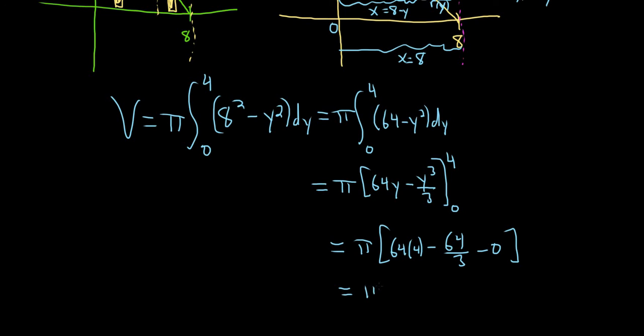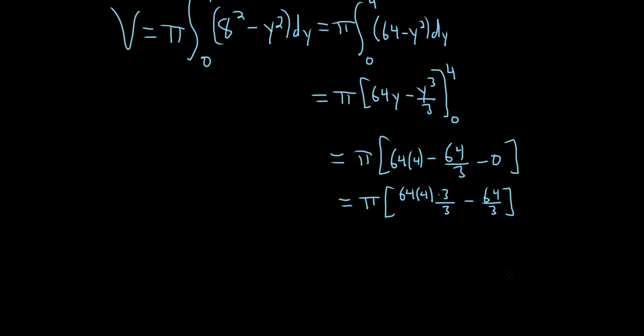So this is pi, I guess we could do this by hand. I could multiply, I could do the following, like this. This is 64 times 4 times 3 over 3 minus 64 over 3. Really clever. Well, maybe not that clever, but. So this is pi, so then you would get 4 times 3, so you get 12. So you get 12 times 64 over 3 minus 64 over 3.